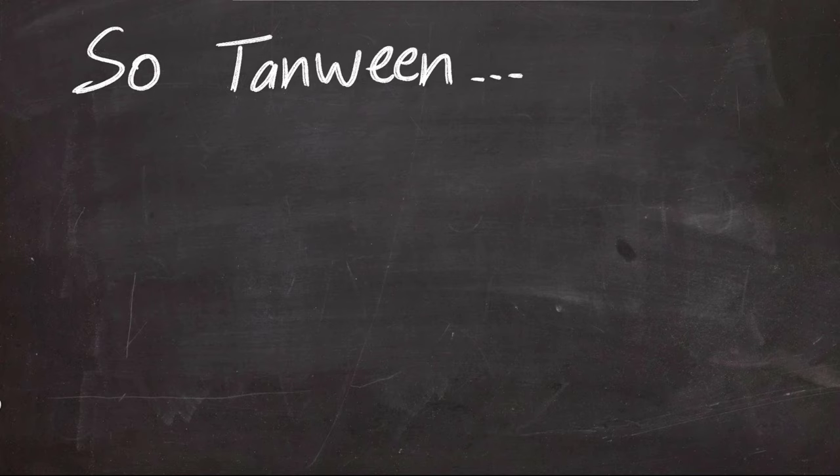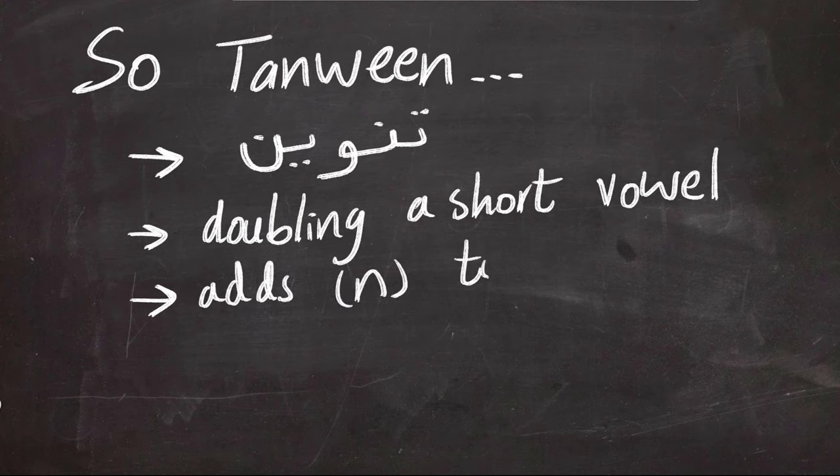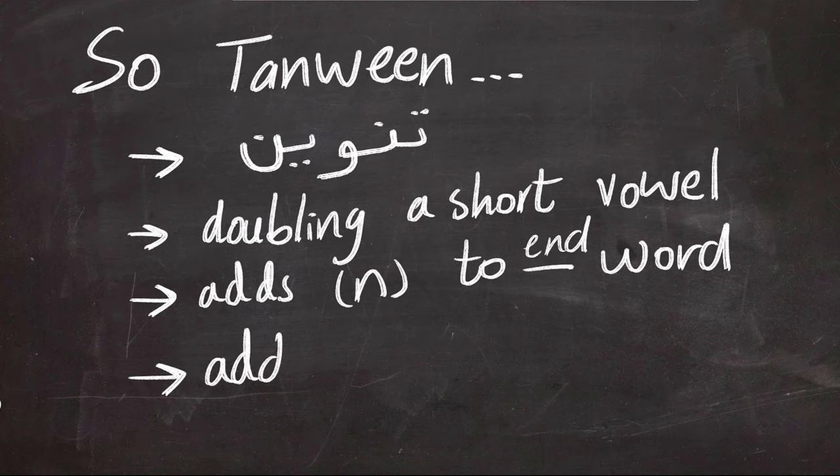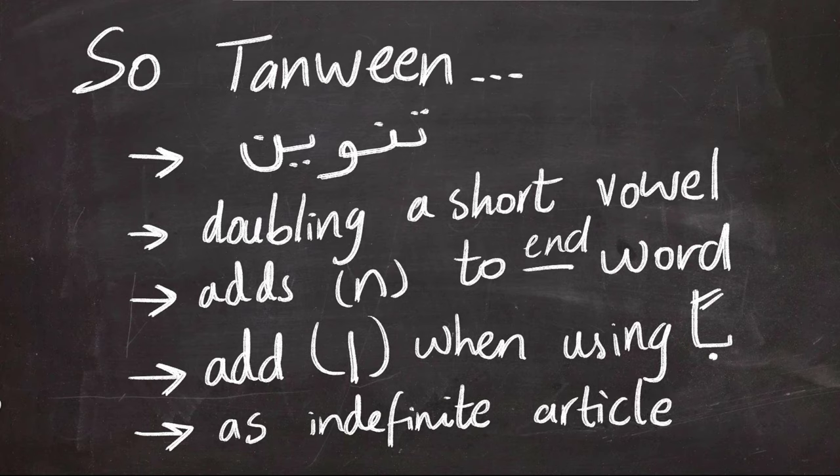Tanween is written in Arabic just like that. It means doubling the short vowel at the end of the word, and it happens only at the end. When this happens, you add N or Nun to the pronunciation. And you must add Alif at the end when using Tanween of Fatha, like Ban.